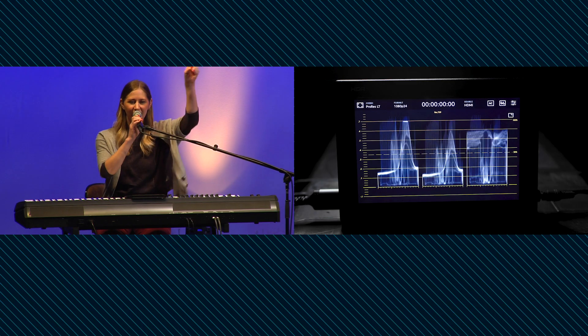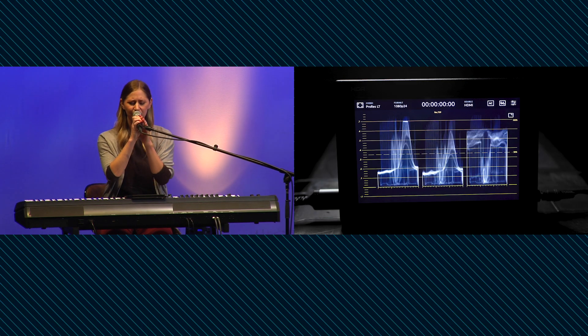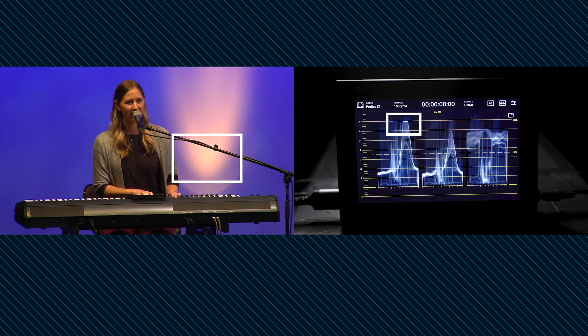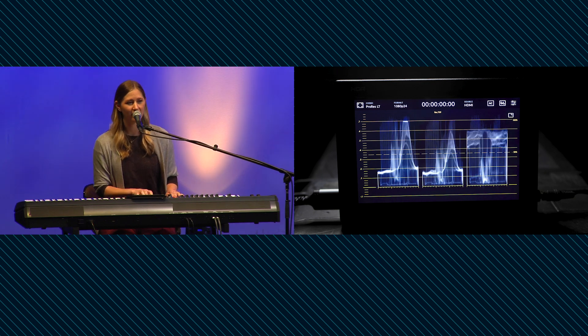RGB parades are also useful in seeing if a color channel is clipping separate from the overall luminance. It's very common if things start looking funny on cameras to have a color channel clipping or lifted individually, but not in the luminance overall, particularly using intensely colored stage lights. The RGB parade helps diagnose all of these problems.